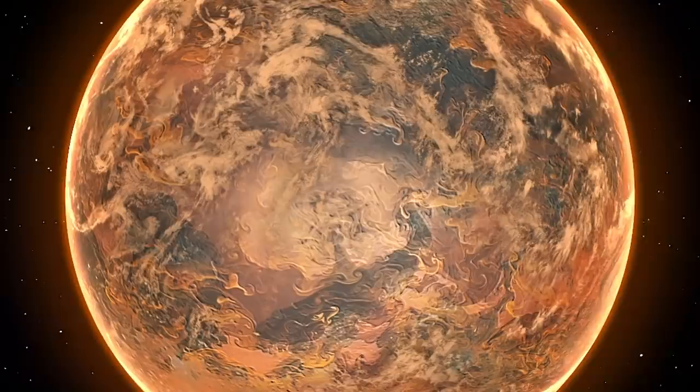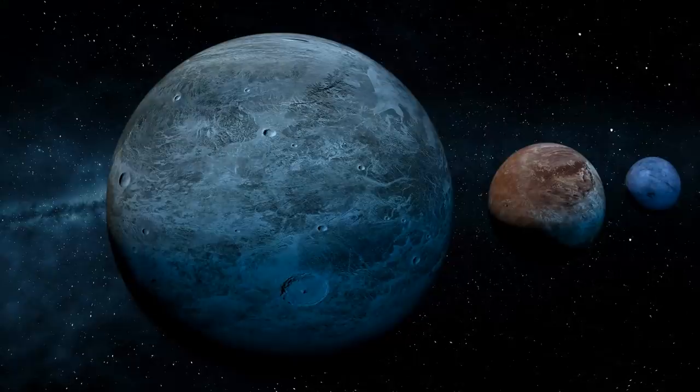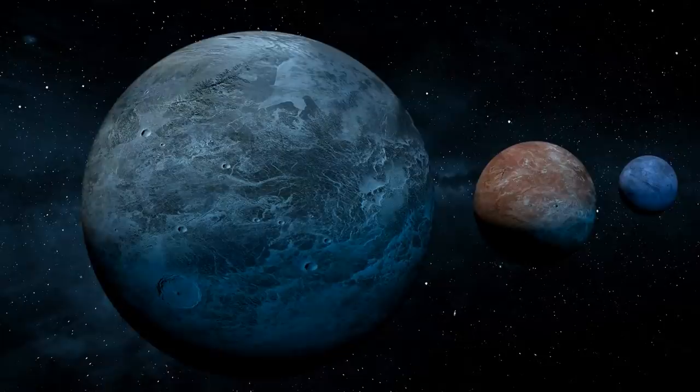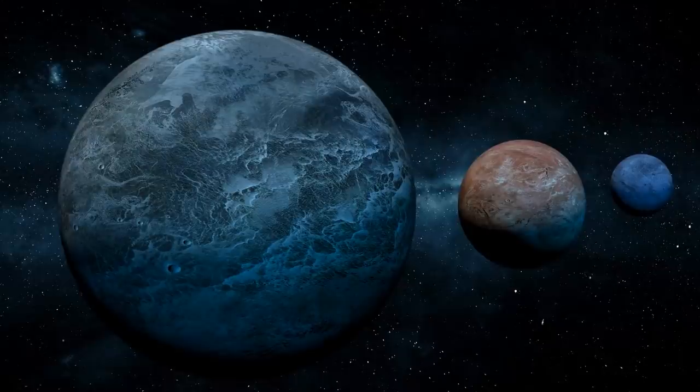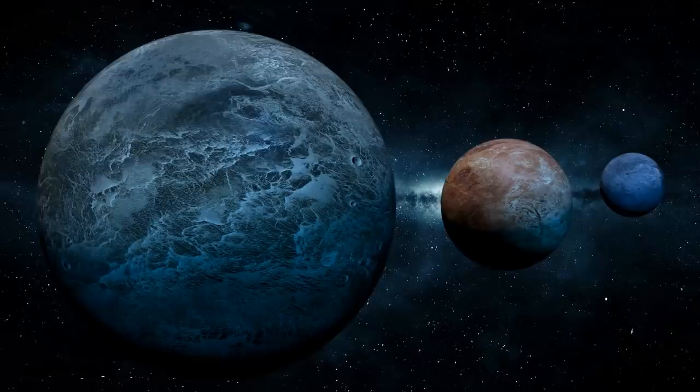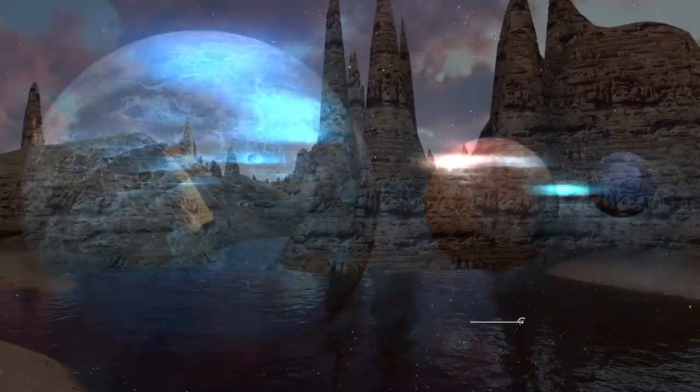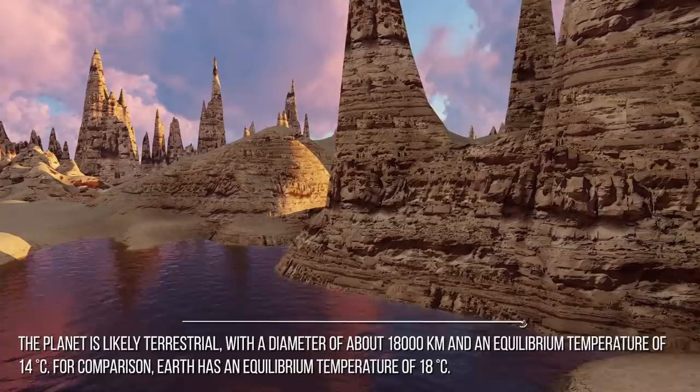Only Proxima Centauri b, Barnard's Star b, Ross 128 b, and Gliese 1061 d are closer. Discovered in June 2017, Luyten b is a super-Earth of around 2.89 times the mass of Earth, receives only 6% more starlight than Earth, which makes it one of the best candidates for habitability. The planet is likely terrestrial, with a diameter of about 18,000 kilometers and an equilibrium temperature of 14 degrees Celsius.